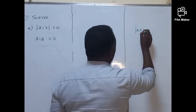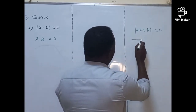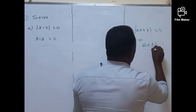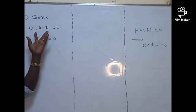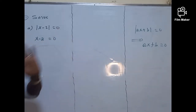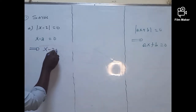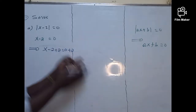Any absolute value of x, x plus b, which is zero — this is equivalently given by x plus b equals zero. So if we need to keep it, this implies that x minus, x plus, which is going to be zero.